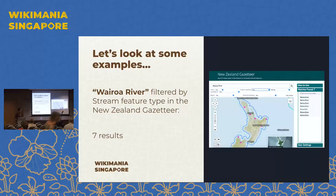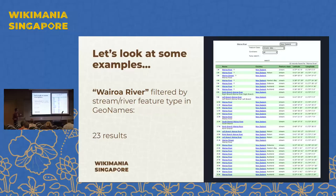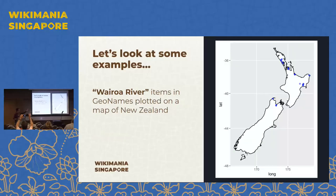For Wairoa River, filtered by stream type, there are a couple on the North Island and two on the South Island — seven results in the official gazetteer. But in GeoNames there are 23 results. You can see particularly with rivers and streams, where they're usually represented by a line, there will often be quite a long range of duplicates. Plotting them as blue dots, you can see it generally matches the gazetteer but with quite a few more dots and lines.